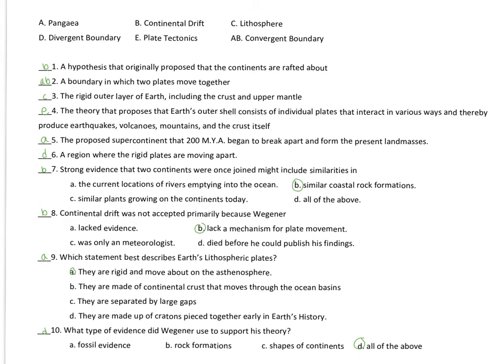Continental drift was not accepted primarily because Wegener lacked a mechanism for plate movement. He couldn't... He got plenty of evidence, right? The puzzle pieces worked. He had the Mesosaurus that he found in South America and Africa, that the continents had to be together in order for it to make sense. He also had the Glossopteris, the fern seed that was distributed. Again, he had plenty of evidence, but without a viable mechanism, he didn't get very far.